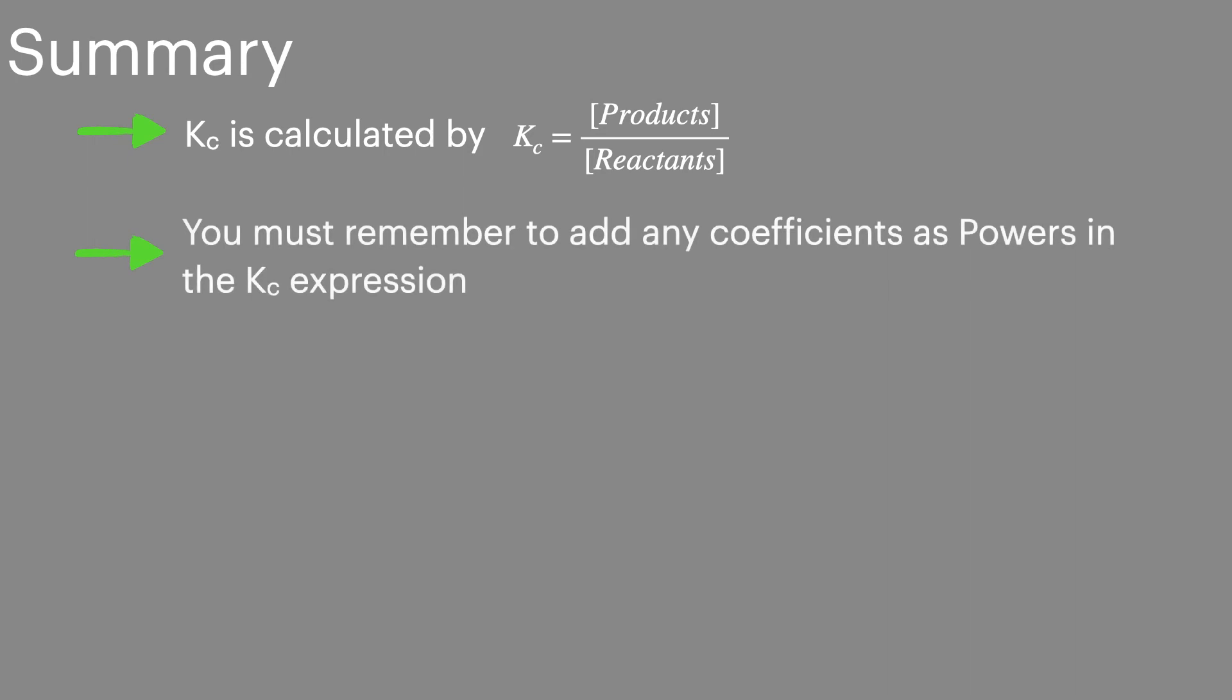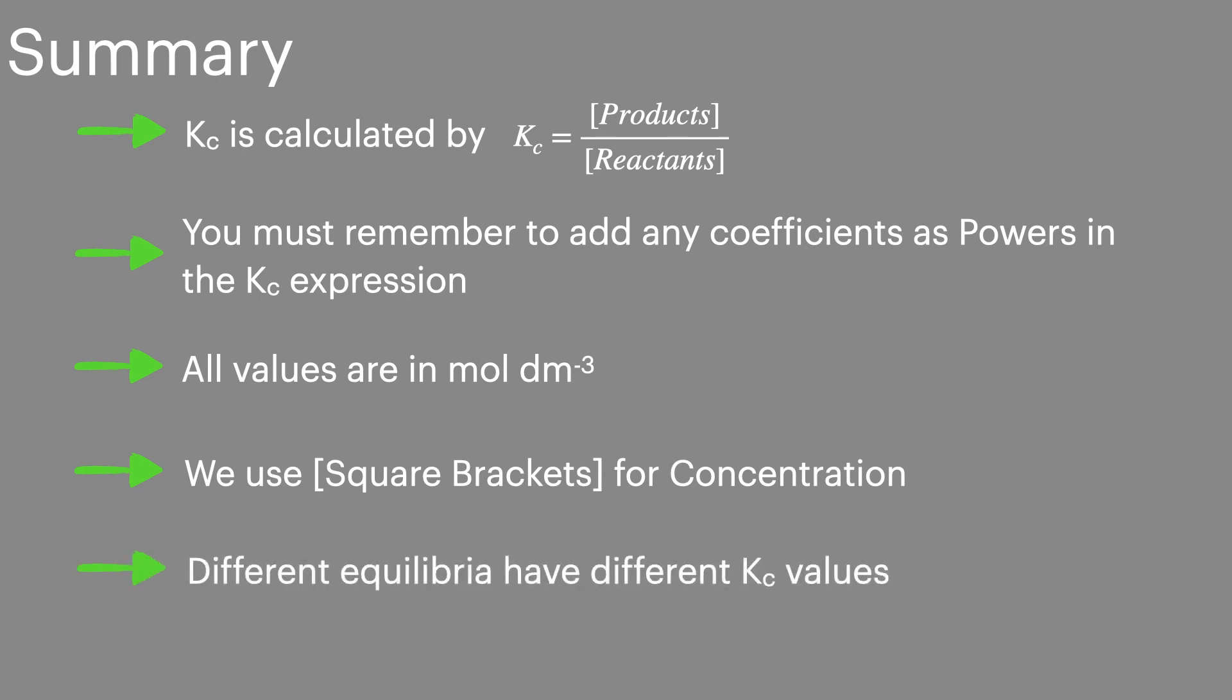In summary then, Kc is calculated by dividing the concentration of products over the concentration of reactants. You must remember to add in the coefficient as powers. All values need to be in moles per decimetre cubed as they are concentrations. We use square brackets to show the concentrations in the expressions. And different equilibria have different Kc values.